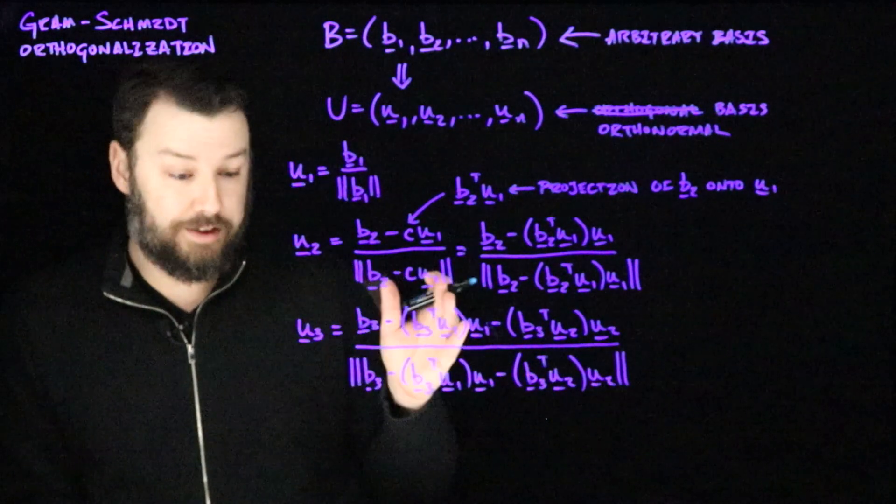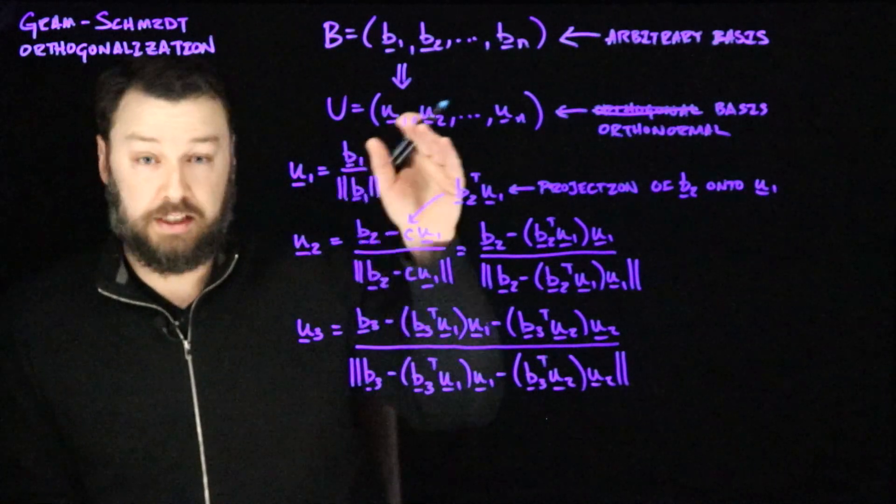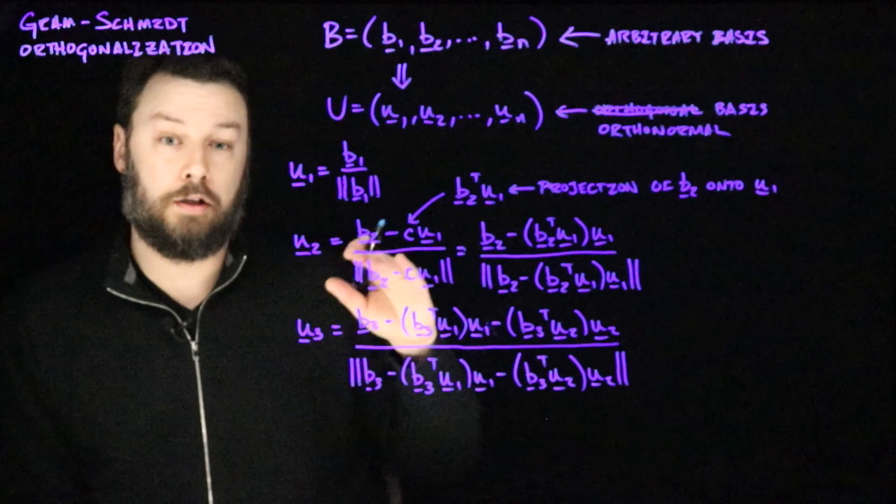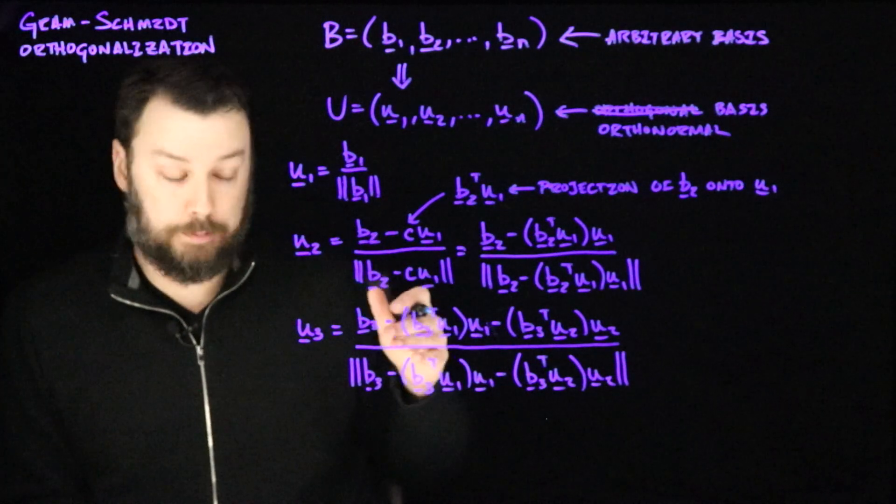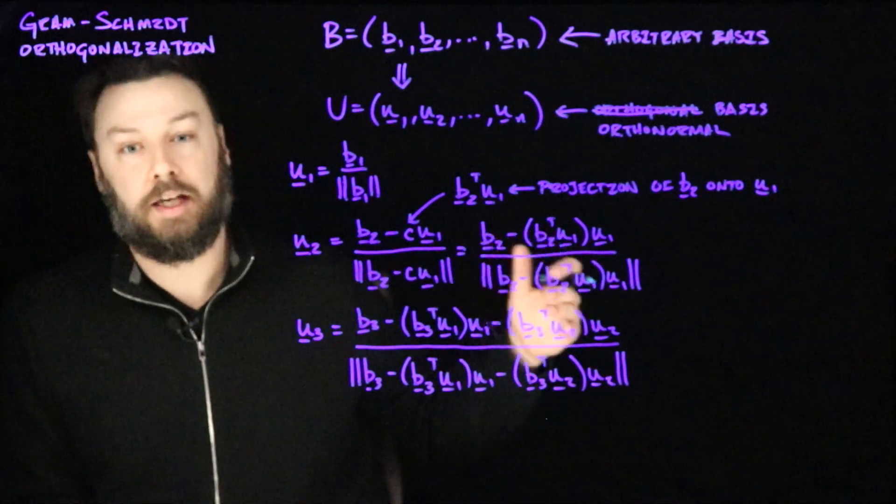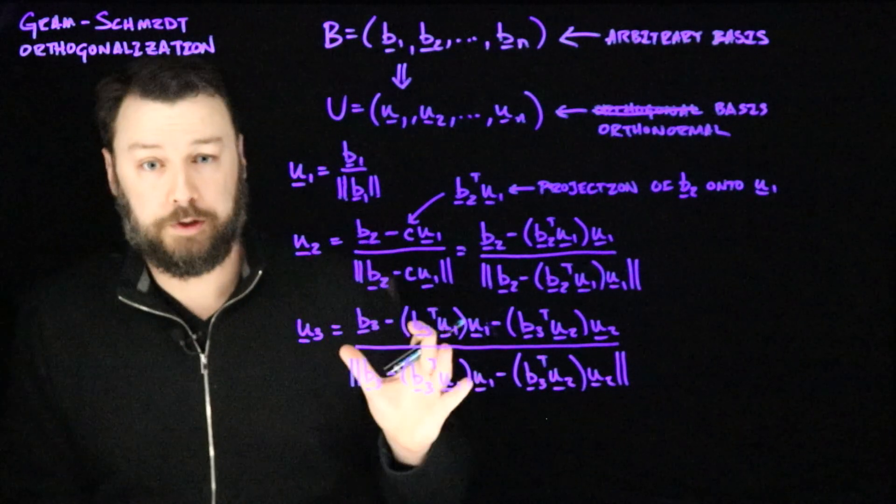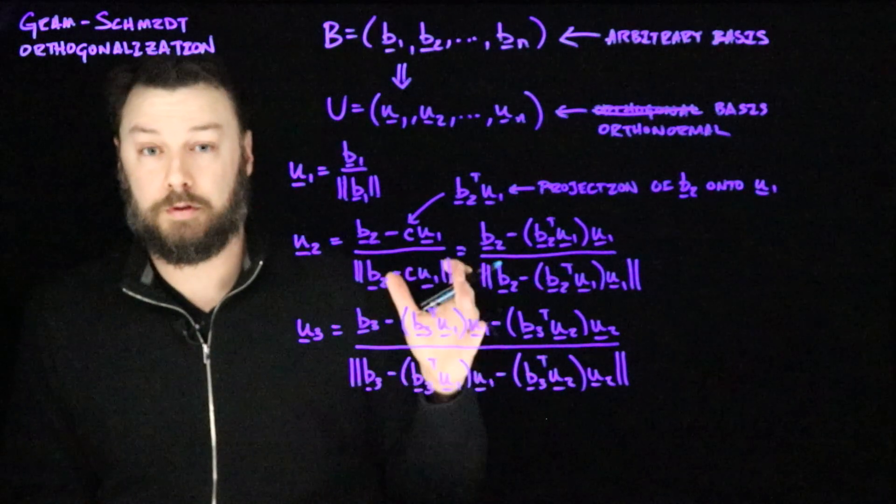In general, for the kth step of this procedure, what you're going to be doing is taking bk, and then you're going to subtract off all of the basis vectors whose index is less than k. So at every step, you add another one based on that b, and then subtract off the effect of all the previous ones. So let's write the general formula for the construction of uk given all of the u's less than k.